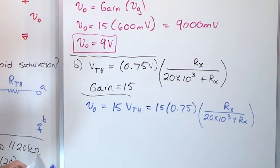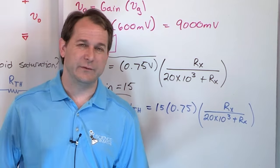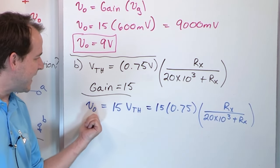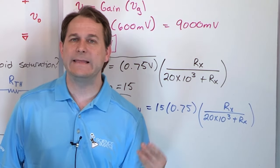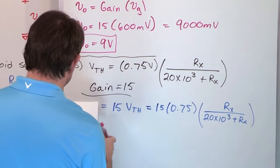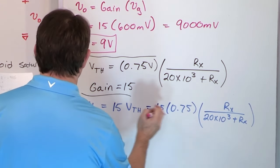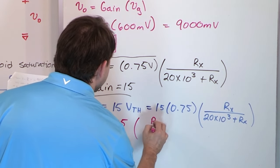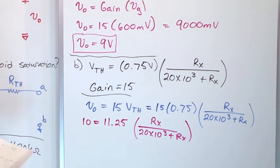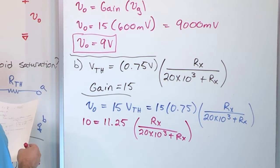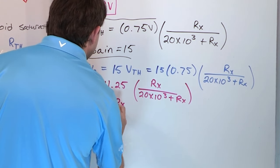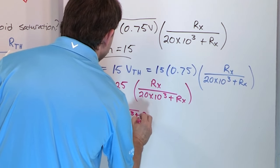Now here's the trick. The output is going to be positive, and we're trying to avoid saturation at plus 10 volts. So we set the output equal to its maximum of 10 volts and solve for R_X. Multiplying 15 times 0.75 gives 11.25, so: 10 = 11.25 × (R_X / (20 × 10³ + R_X)). Dividing both sides by 11.25 gives 0.889 = R_X / (20 × 10³ + R_X).